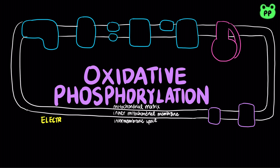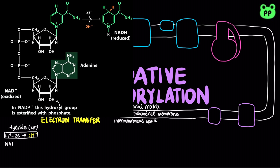Three types of electron transfers occur in oxidative phosphorylation. First, electrons can be transferred as a hydride ion, which bears two electrons, such as the reduction of NAD+ to NADH, catalyzed by NAD-linked dehydrogenases in various catabolic pathways.